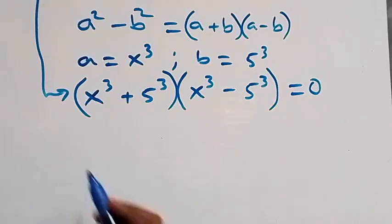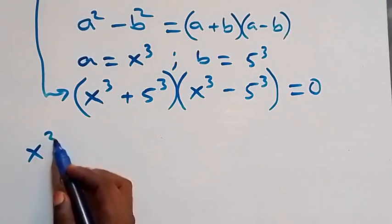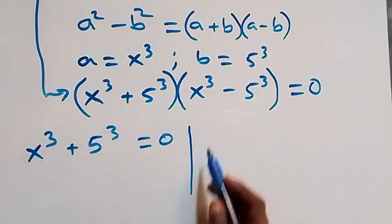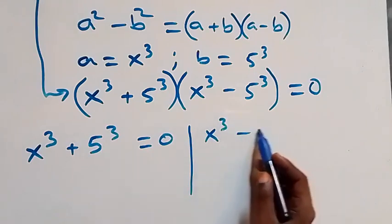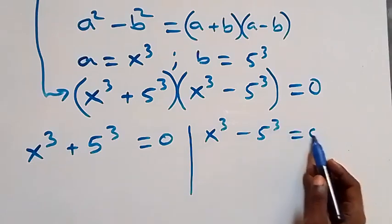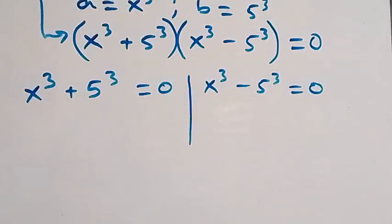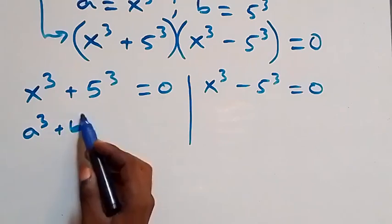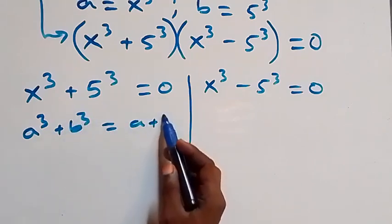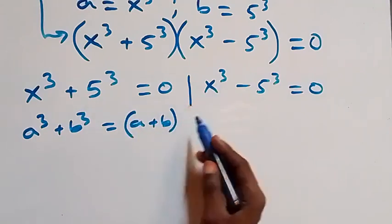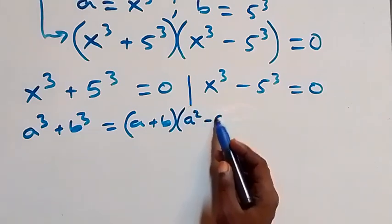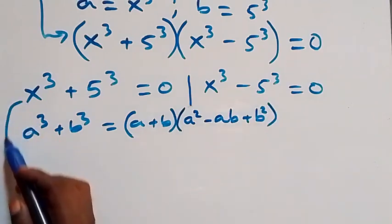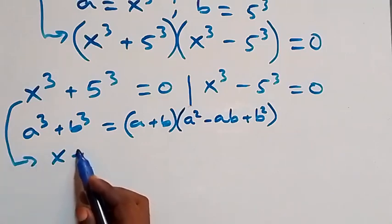We have two possible cases: x raised to power 3 plus 5 raised to power 3 equals zero, and x raised to power 3 minus 5 raised to power 3 equals zero. For the first case, we apply the sum of cubes formula: a cubed plus b cubed equals a plus b, times open bracket a squared minus ab plus b squared.